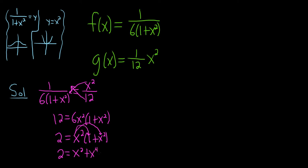This is an equation of degree 4. It's called a quartic equation. So we should set it equal to 0 and attempt to factor it. So we have x to the fourth plus x squared and then minus 2. And this is equal to 0.